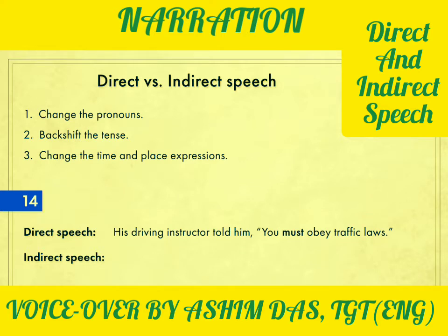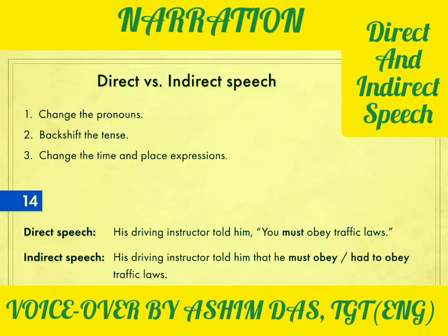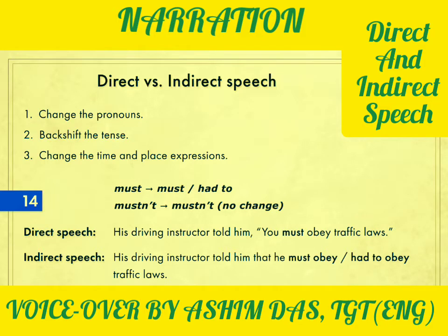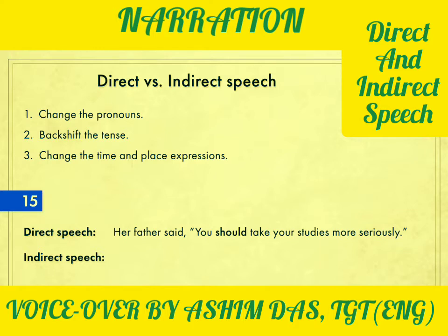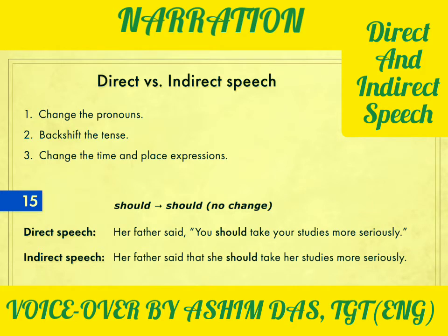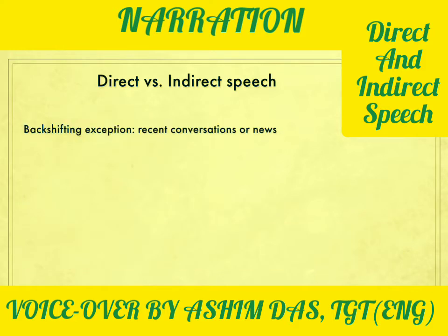Sentence fourteen: his driving instructor told him, 'You must obey traffic rules.' The answer: his driving instructor told him that he must obey — or had to obey — traffic rules. 'Must' can either stay the same or be changed to 'had to.' But if you have 'mustn't,' it must stay as 'mustn't.' For example: 'The police officer said you mustn't park here' becomes 'the police officer said that I mustn't park there.' Sentence fifteen: 'You should take your studies more seriously,' her father said. Answer: her father said that she should take her studies more seriously. 'Should' is already past tense of 'shall,' so we leave it unchanged — same applies to 'would,' 'could,' and 'might.'